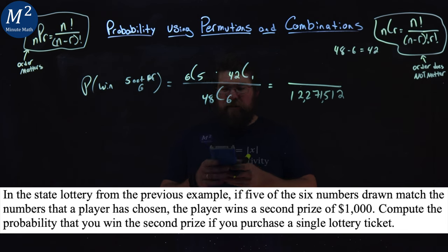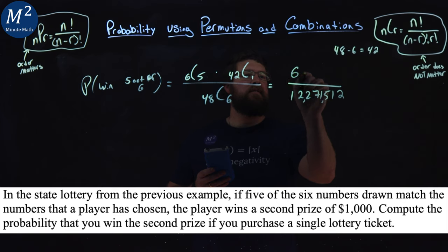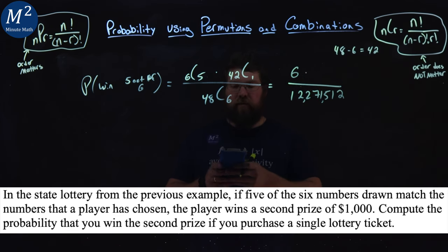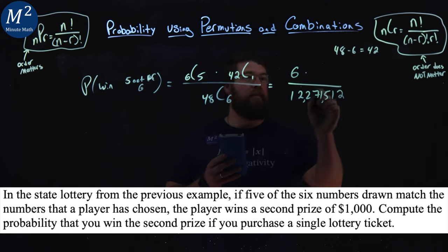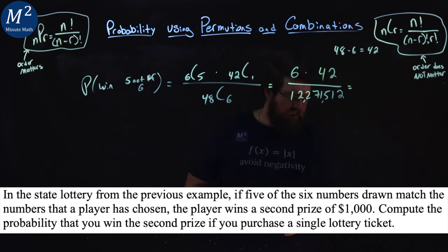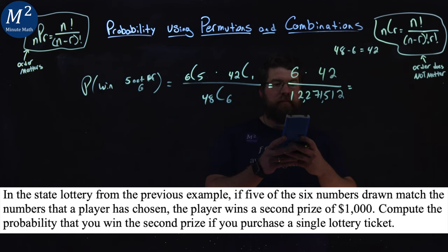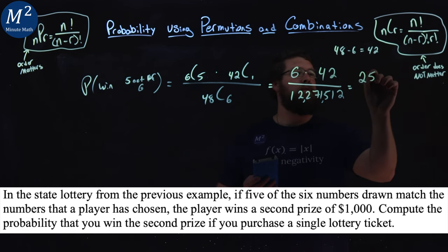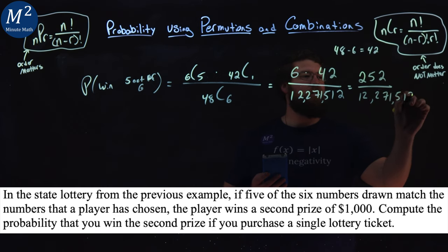We do 6 choose 5, and that is 6. And 42 choose 1, that's 42. Multiply that out: 6 times 42, that's 252. So we have 252 out of 12,271,512.